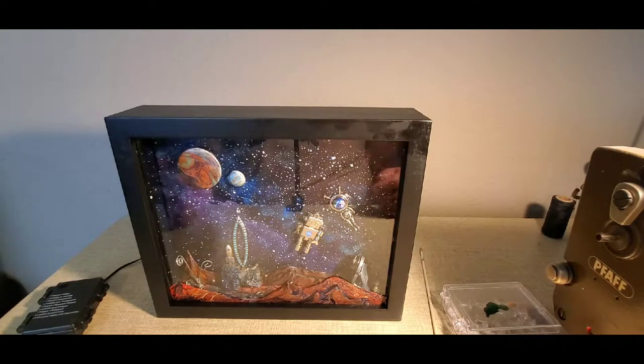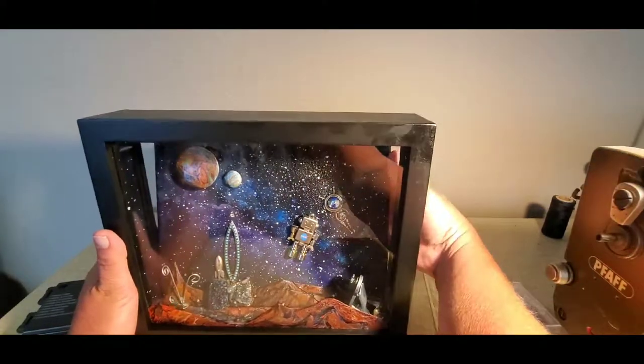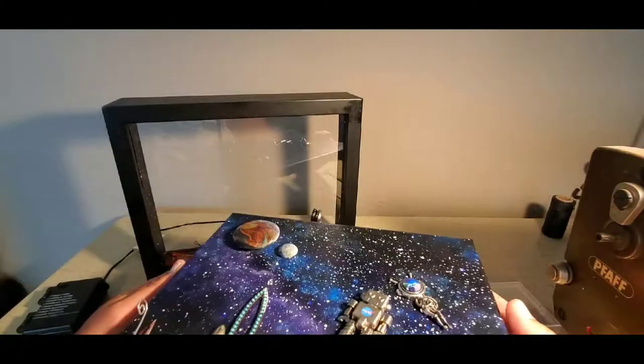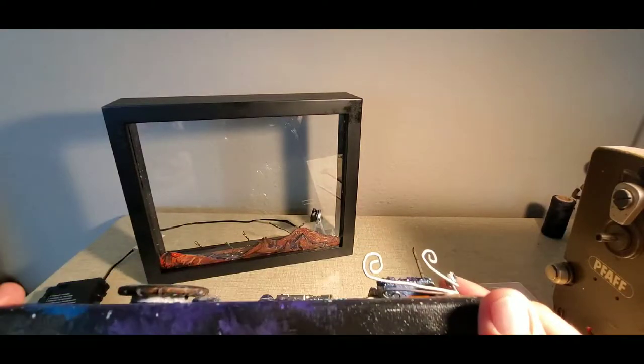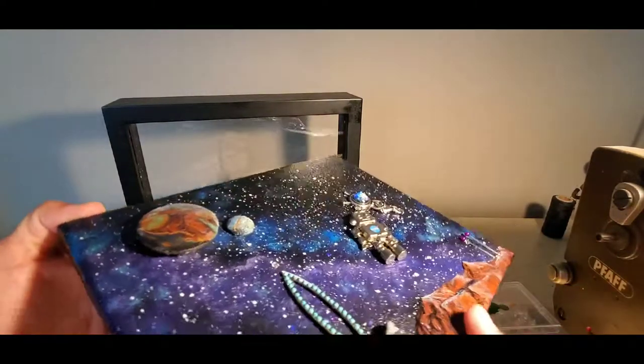Okay, welcome back everybody. We're going to finish up this shadow box. I've glued on these planets with super glue, not a great idea. The fumes affect the glass. I glued the dot on and then glued it on top so I'd have a little 3D effect.